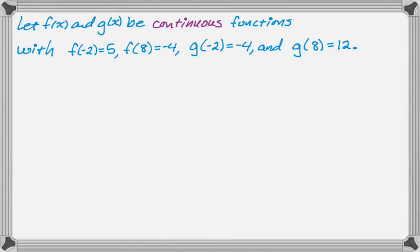So, let's do a problem. Let's say that f(x) and g(x) are continuous functions, so we need that to be true, or this doesn't even apply. So, with f(-2)=5, f(8)=-4, g(-2)=-4, and g(8)=12. So, what we want to do is, we want to show that f(x) equals g(x) for some value of x between -2 and 8. So, what we're trying to do is, we're trying to take these points and somehow combine them. So, typically what I do in a problem like this is, I actually define a new function.